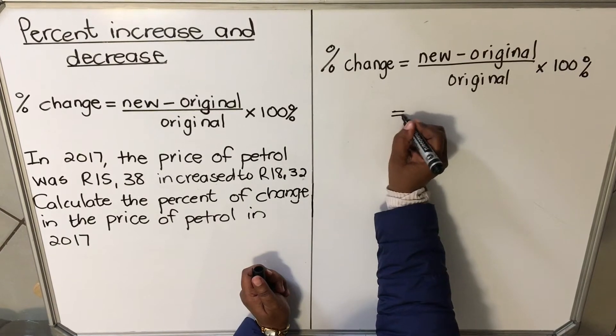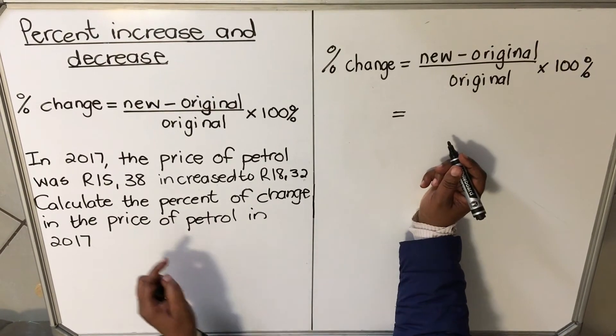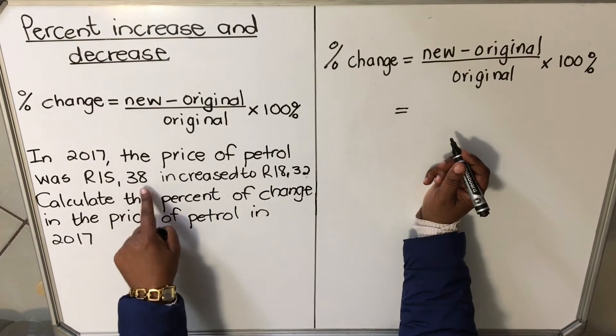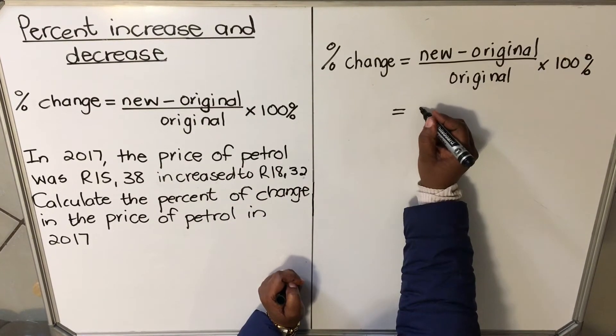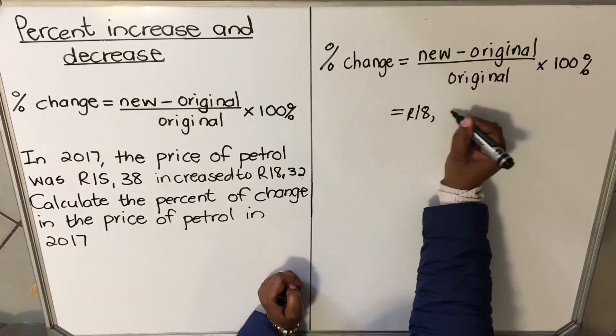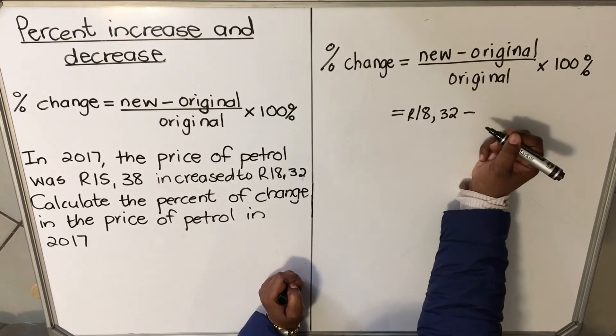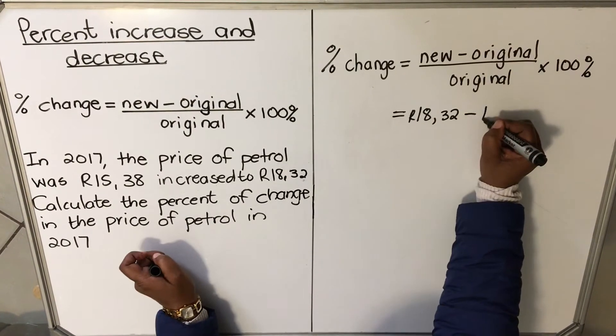So the new amount here - the price was R15.38 and then it increased to R18.32. So the new amount is R18.32 minus the original price, R15.38.